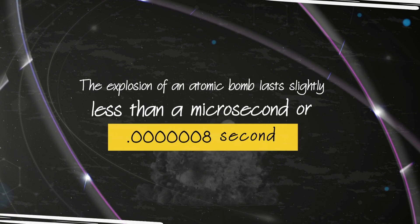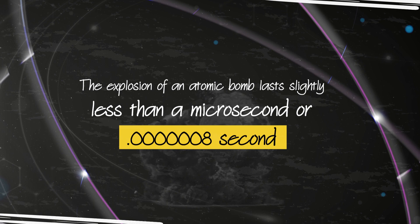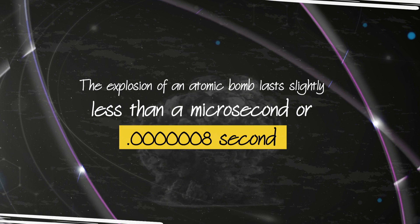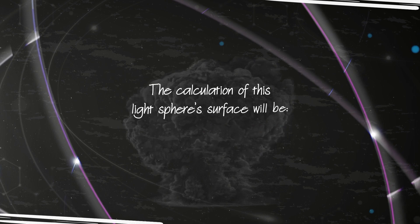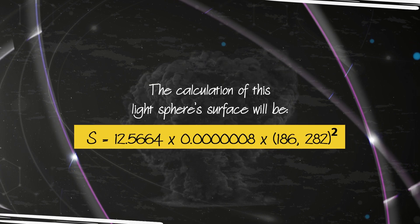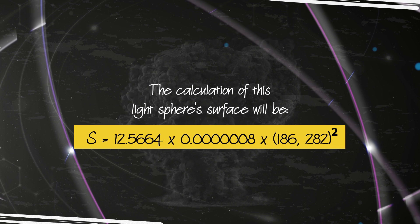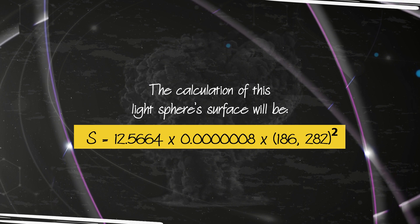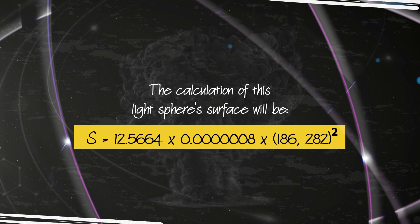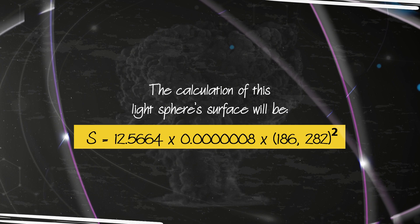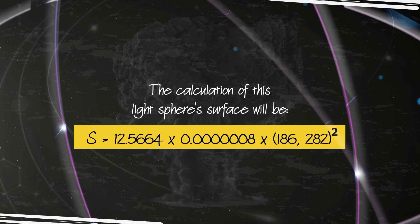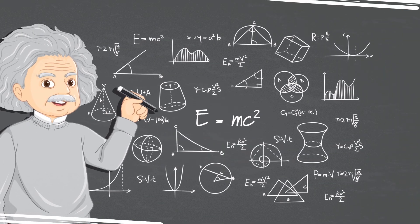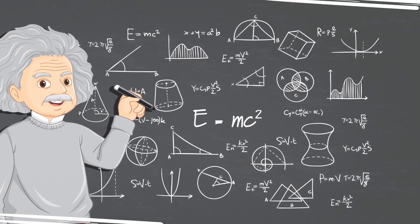The explosion of an atomic bomb lasts slightly less than a microsecond, or .0000008 second. The calculation of this light sphere's surface will be S equals 12.5664 times 0.0000008 times 186,282 squared. Einstein simplified the above calculation to E equals mc-squared.